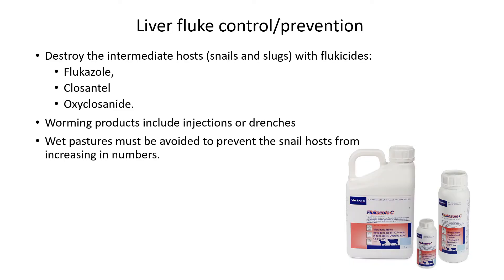To control liver flukes, several chemicals can be used to dose the animal — the easiest to remember is flukazole, which can be obtained from agricultural suppliers. Treatment products can include injections or drenches (drenches go into the mouth; injections into the skin, muscle, or bloodstream). Wet pastures must be avoided at all times — keep animals away from constant wetland areas or areas that retain standing water for weeks after heavy rain.